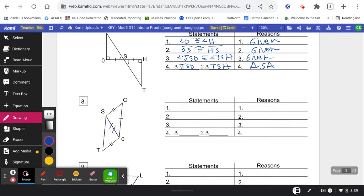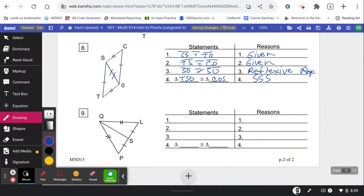Okay, this next one we're going to need this reflexive side in order to do the side, side, side congruency. So side CS is congruent to side TO. Side TS is congruent to side CO. And then we need this reflexive side: side SO is congruent to itself. And so triangle TSO is congruent to triangle COS by side, side, side.